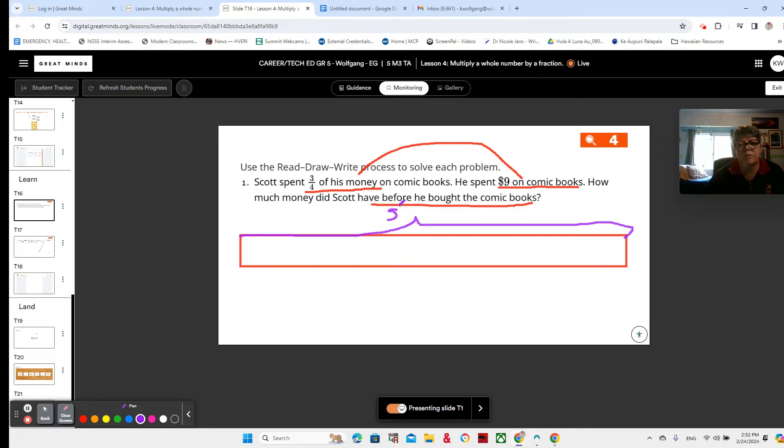This tape diagram is going to represent all of Scott's money. This is Scott's money before he got the comic book. We want to partition this tape diagram into sections. How many sections should we make it into? I'm thinking about four. Do you see the four here, four parts? Three lines makes four parts. We don't know how much money this is—that's what we are wondering. But we do know something. We do know that three-fourths of the money is what he spent.